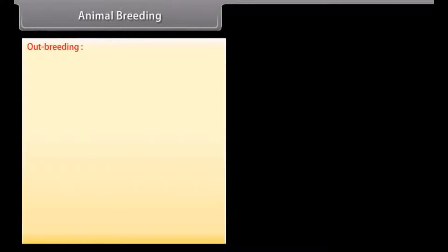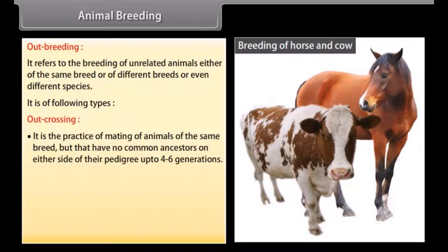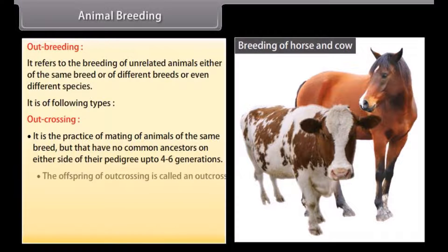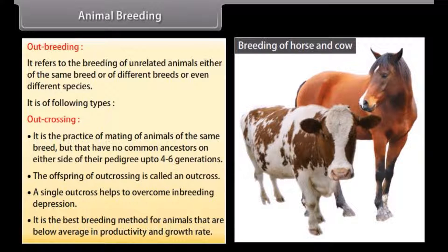Outbreeding refers to the breeding of unrelated animals, either of the same breed or of different breeds or even different species. It is of the following types. Outcrossing is the practice of mating animals of the same breed but that have no common ancestors on either side of their pedigree up to 4 to 6 generations. The offspring of outcrossing is called an outcross. A single outcross helps to overcome inbreeding depression.